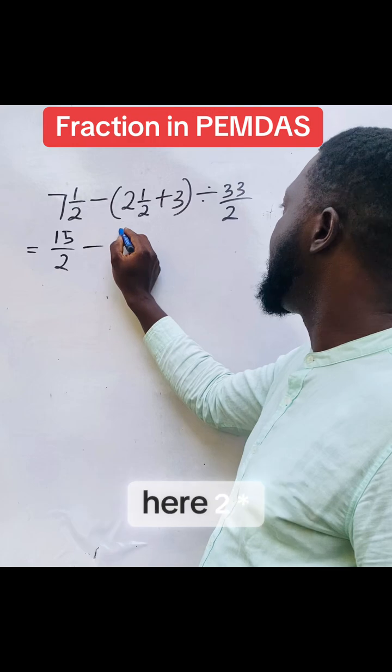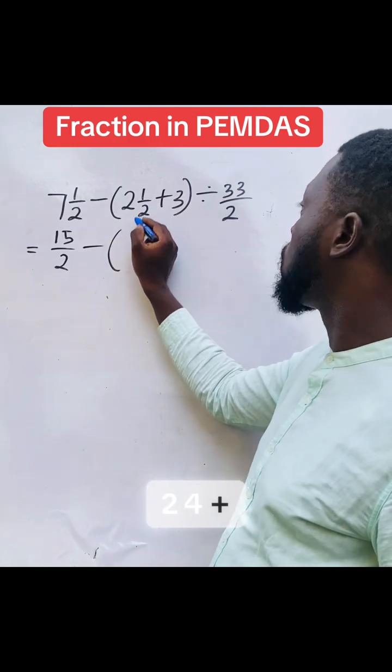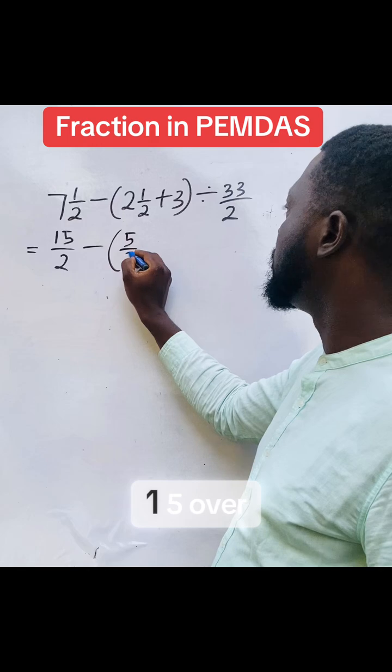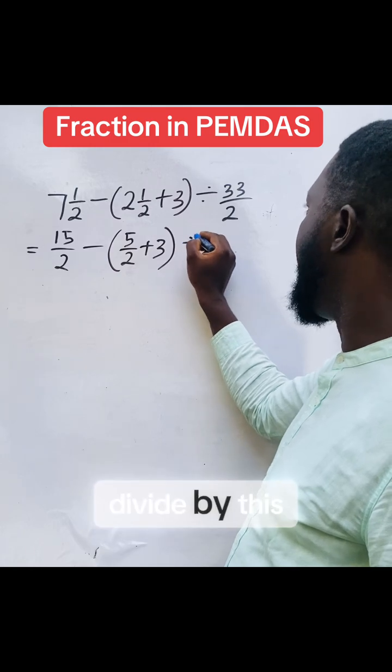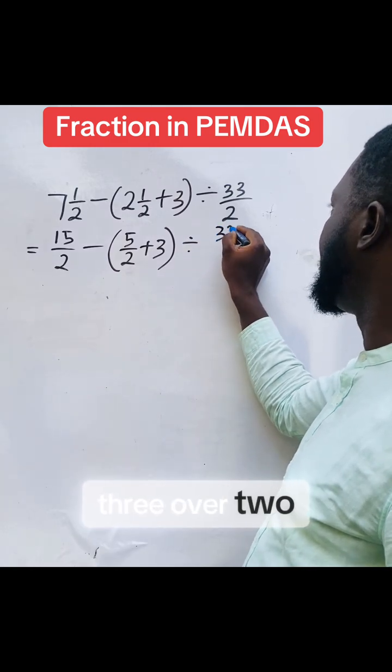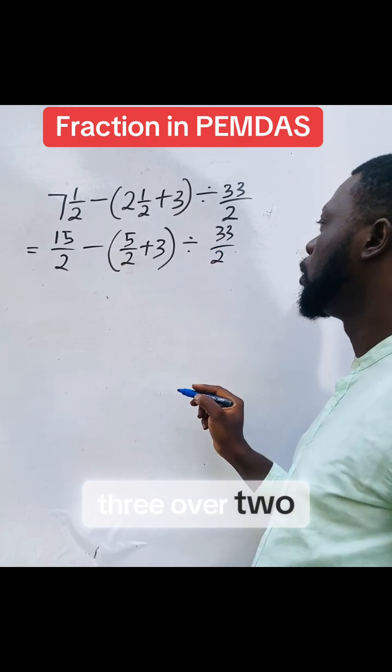Minus this one here. 2 times 2 is 4, plus 1, 5 over 2, plus 3. 3 divided by this one is 33 over 2. So quickly.